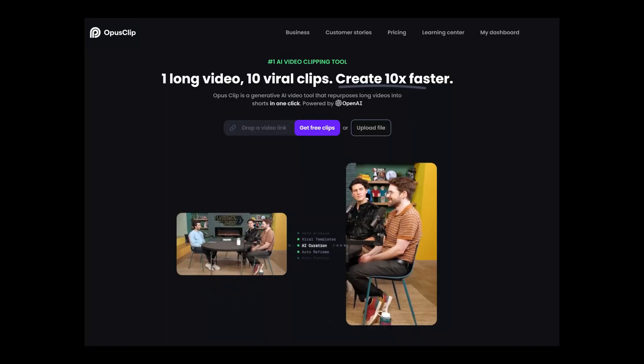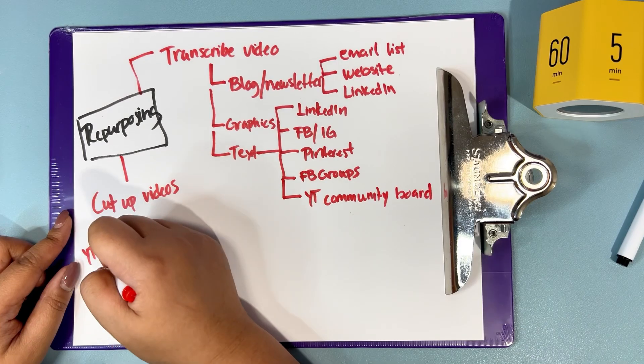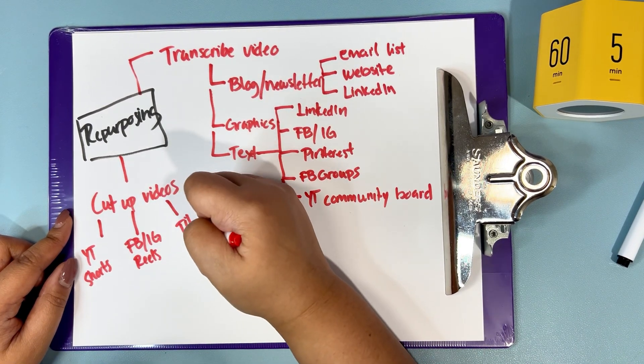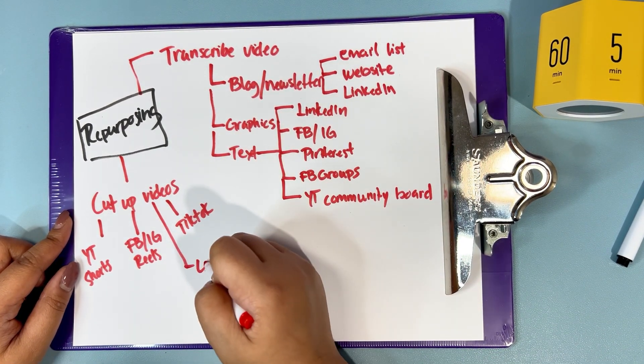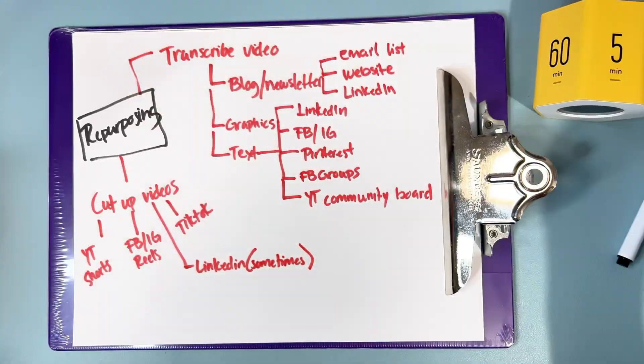Descript is easy to use and if you're already paying for it, it's a good option. If you're short on time, Opus Pro is a good alternative though it has some limitations. Let me know in the comments if you'd like a tutorial on using Descript to cut your videos. And I'll see you next time. Bye!